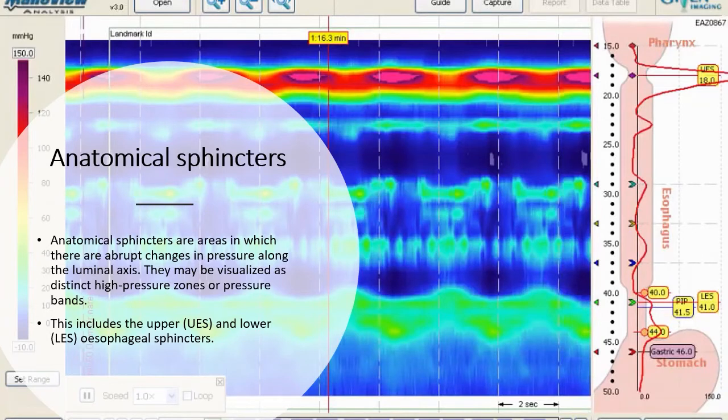Anatomical sphincters are areas in which there are abrupt changes in pressure along the luminal axis. They may be visualized as distinct high pressure zones or pressure bands. This includes the upper and the lower esophageal sphincters.